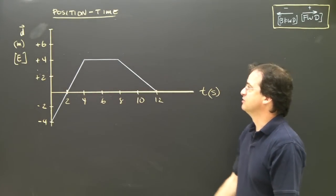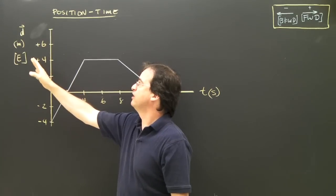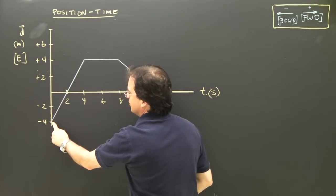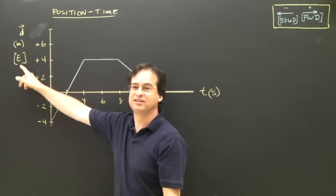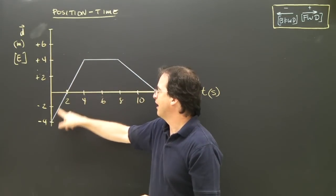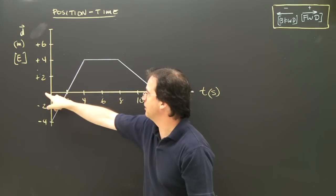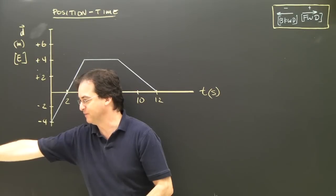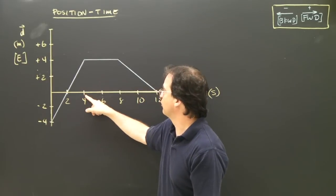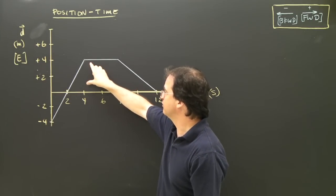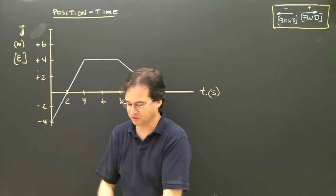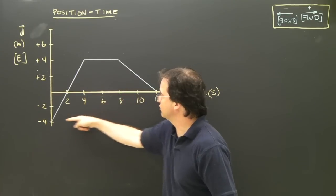Let's look at what this position-time graph is telling us. The first thing we ask: what type of graph is it? A position-time graph, which tells us where we are at any given time. Looking at the numbers: at zero seconds, I'm at negative four meters — since positive is east, I'm four meters west, so I must be over here. At two seconds, I'm at zero meters. I was at negative four meters, now I'm at zero, so I'm moving forward. At four seconds, I'm at positive four meters. So I was at negative four, then zero, then positive four — this whole section is moving forward.